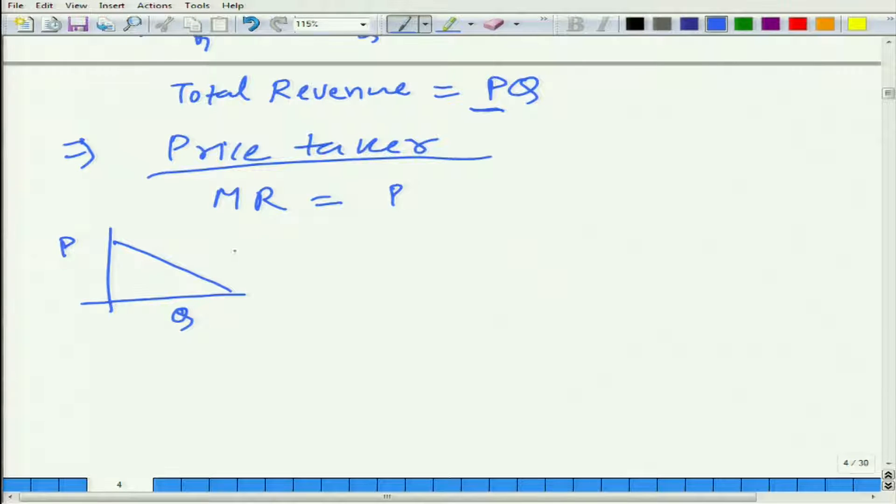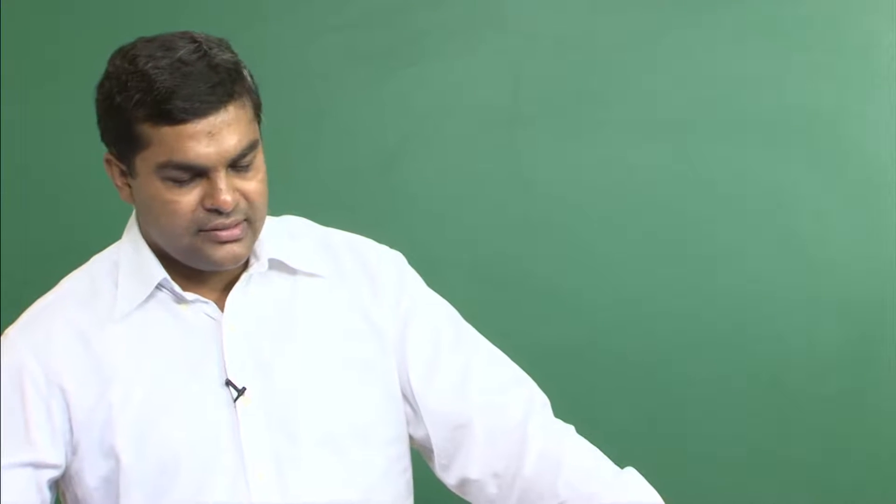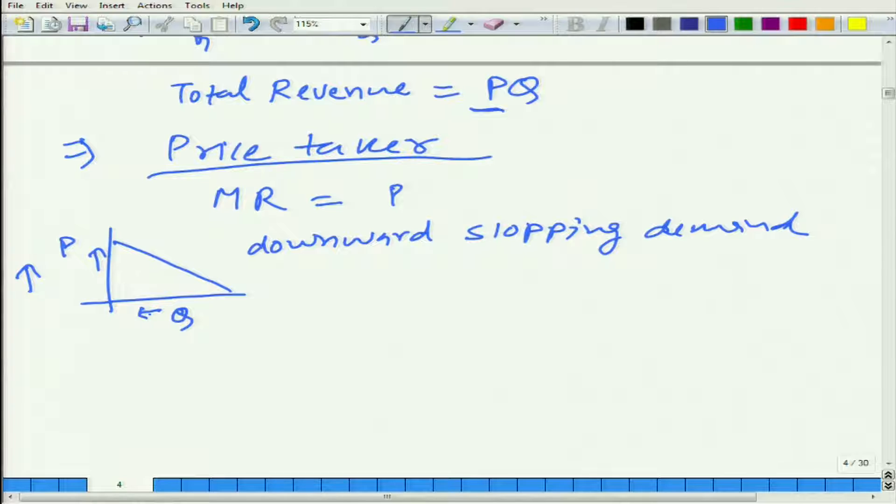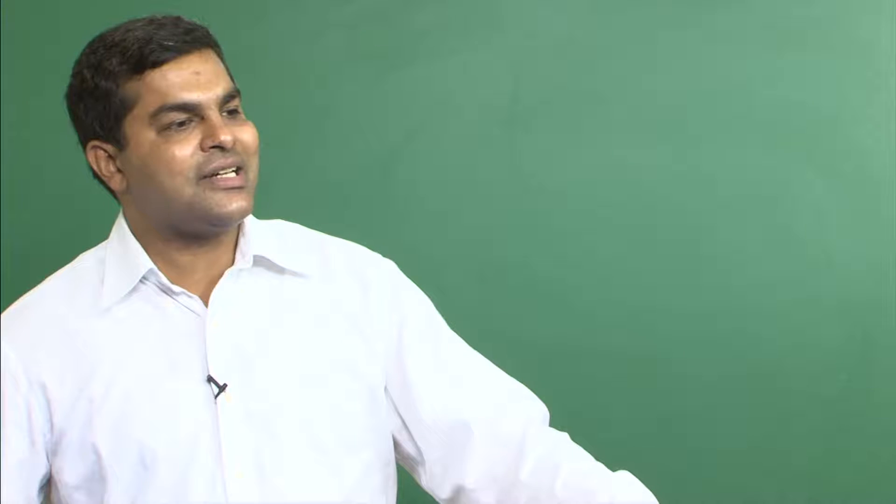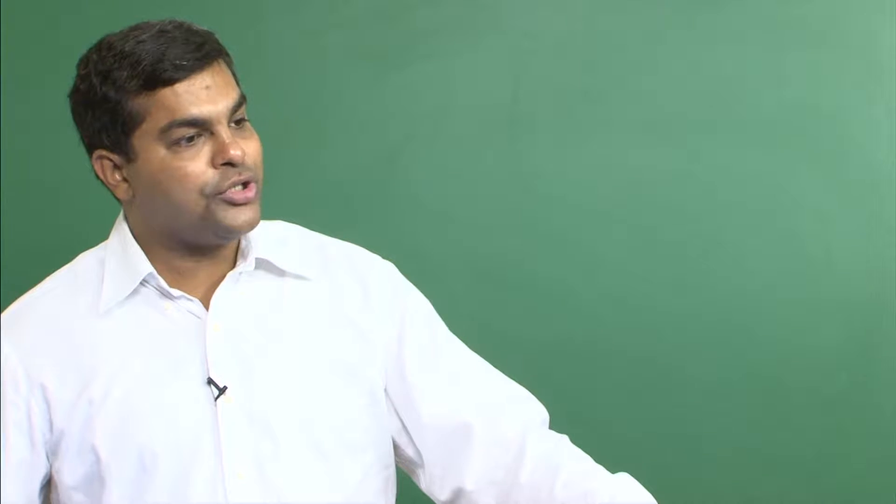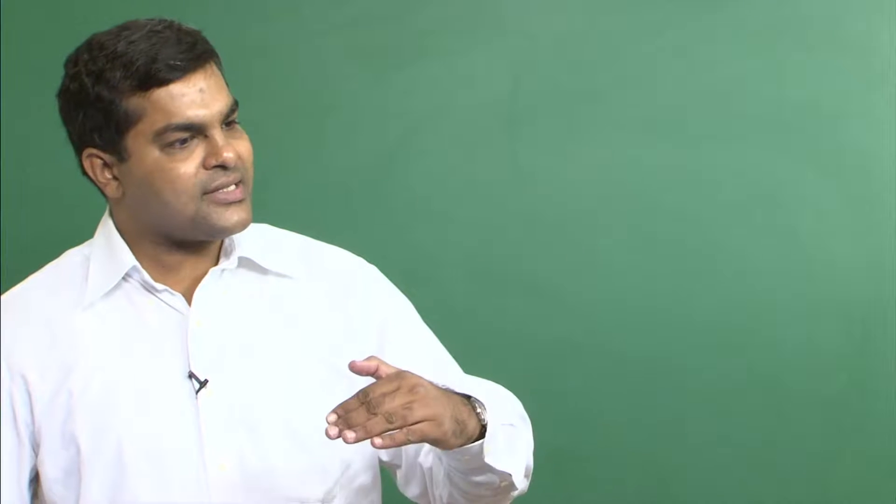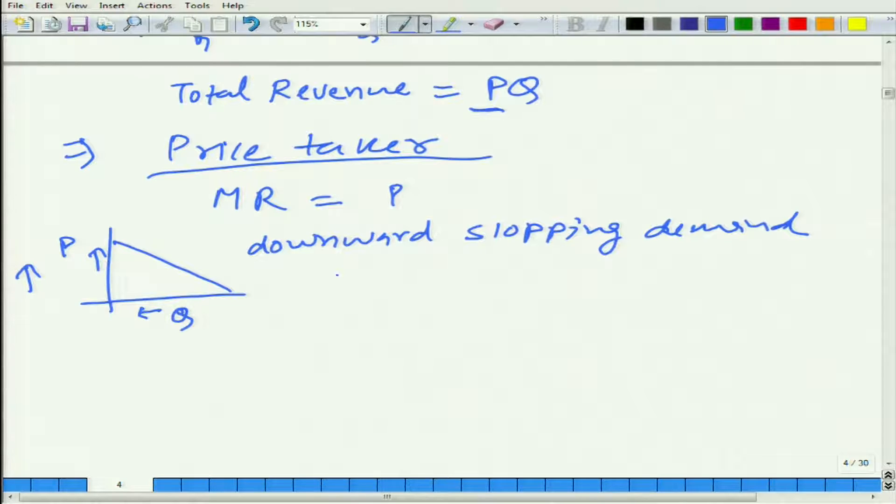In this case with downward sloping demand, what is happening is that the firm is able to set the price, but when the firm increases the price, higher the price, lower will be the demand of its good. If you increase P you will move in this direction. So in that case we cannot say the marginal revenue is equal to P. Why? Because when this firm sells one more unit of good, it is able to do so only because it has reduced the price.